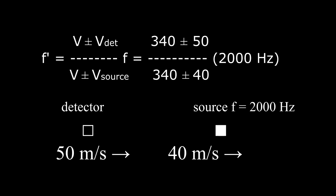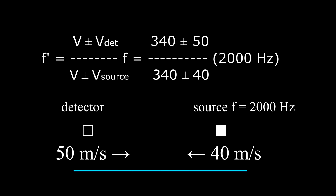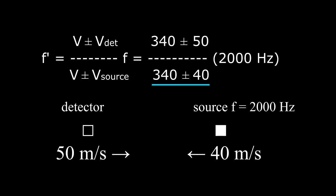In the first problem, both objects were moving to the right. The only thing different in this problem is that both objects are moving toward each other. In the Doppler shift equation, we fill in the frequency and the velocities and then choose the plus or minus signs.